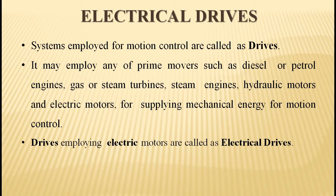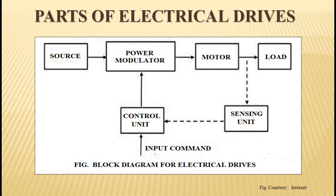The drives we are going to use here will be controlled or employed with electrical motors. Regarding the parts of electrical drives, we have a block diagram showing the different parts: source, power modulator, motor, and load. For closed loop operation, we also need a sensing unit and a control unit for controlling the power modulator. The control unit is given an input command.